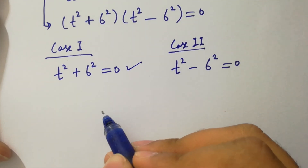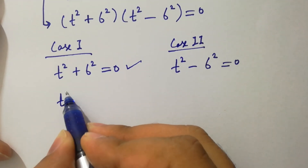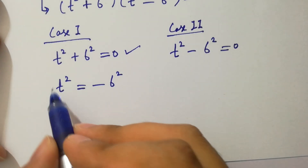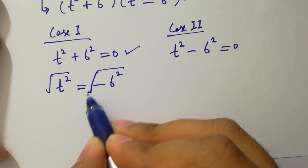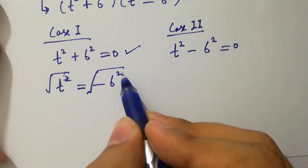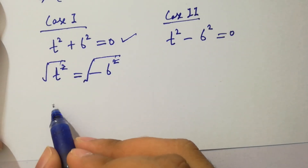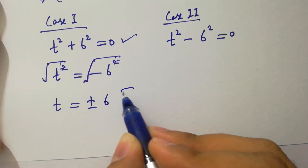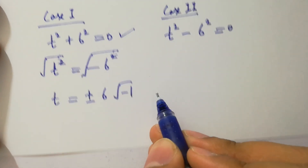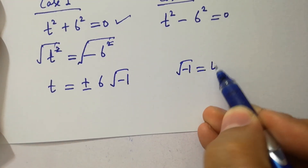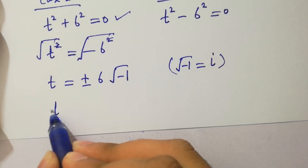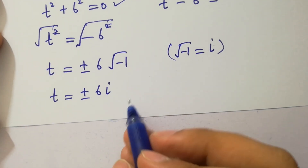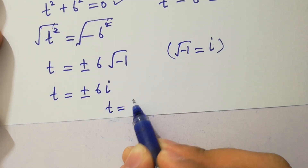From Case 1, we have t² equal to minus 6². Taking the square root on both sides, the square cancels from the square root. We have t equal to the square root of minus 1 times 6, giving t equal to plus or minus 6i. So the solution here is t equal to ±6i.